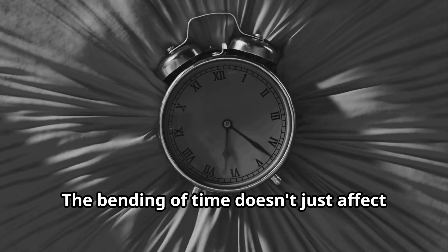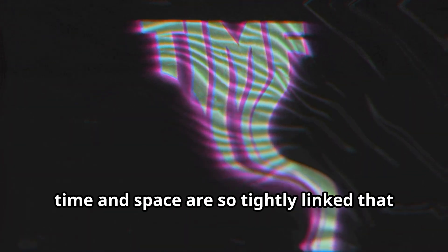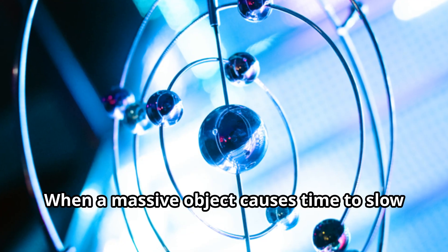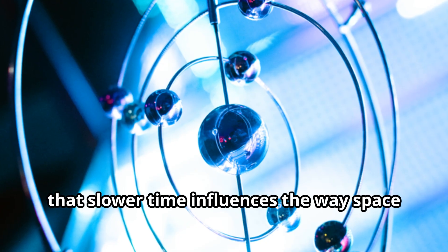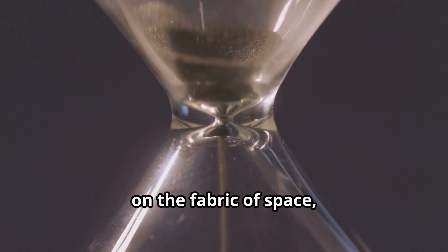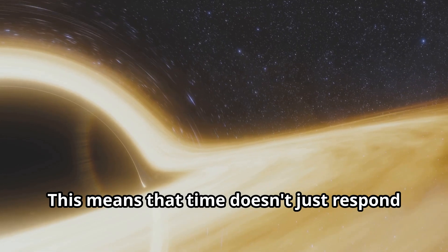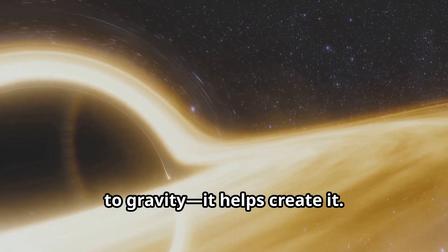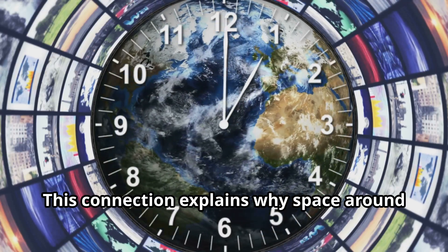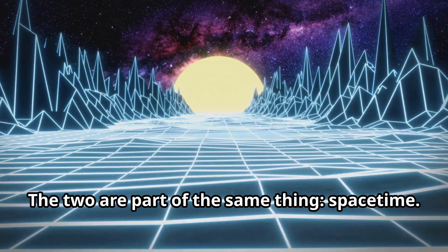The bending of time doesn't just affect how objects move, it actually helps shape space as well. In the universe, time and space are so tightly linked that changing one can change the other. When a massive object causes time to slow down near it, that slower time influences the way space behaves around it. The stretching of time acts like a weight on the fabric of space, pulling it down and creating curvature. This means that time doesn't just respond to gravity, it helps create it. The slower time becomes, the more the space around it curves.